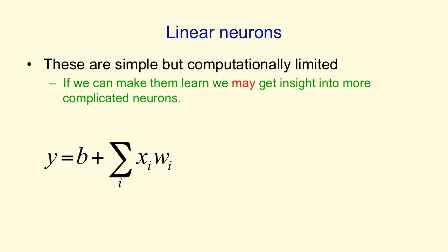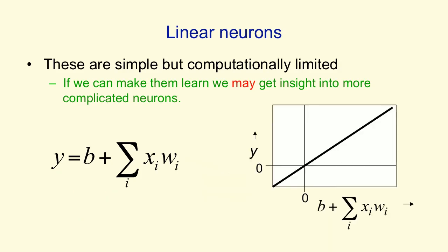In a linear neuron, the output y is a function of a bias of the neuron, b, and the sum over all its incoming connections of the activity on an input line times the weight on that line. If we plot that as a curve, where on the x-axis we have the bias plus the weighted activities on the input lines, we get a straight line that goes through zero.